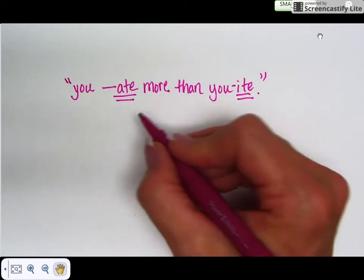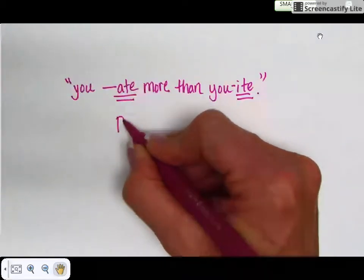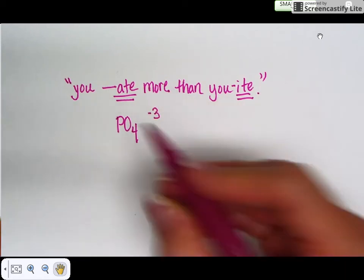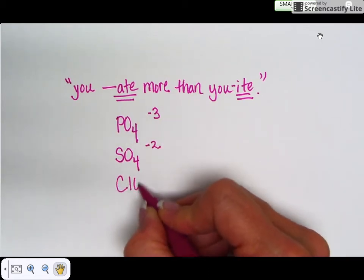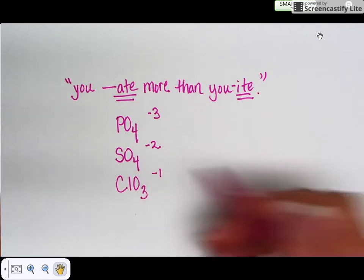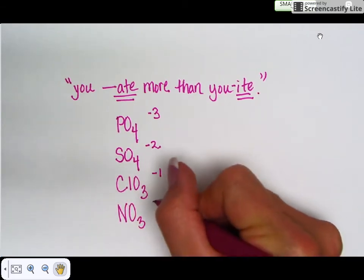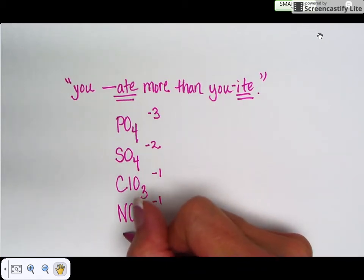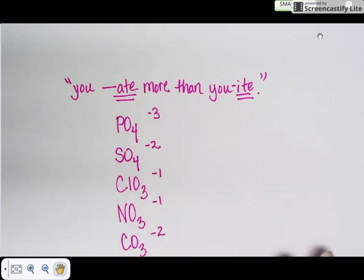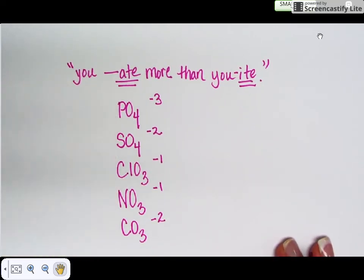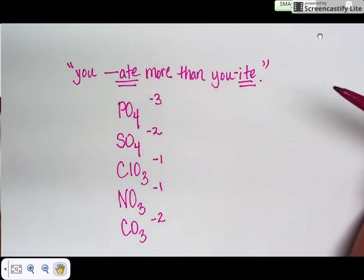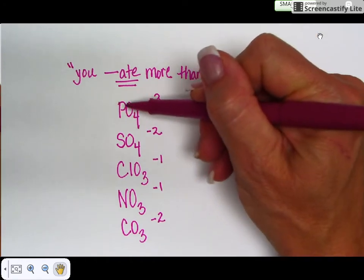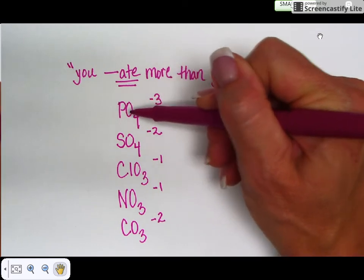If you remember this saying and then you memorize the formulas that end in -ate, for example phosphate PO4 with a negative three charge, sulfate is SO4 with a negative two charge, chlorate ClO3 with a negative one charge, nitrate NO3 with a negative one charge, and carbonate CO3 with a negative two charge. Here I've written down five formulas for polyatomic ions that end in -ate. Notice they all have in common they have oxygens in them. That's the significance of the ending. So memorize these five.